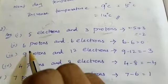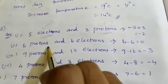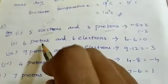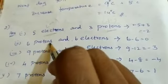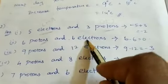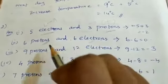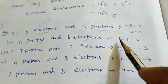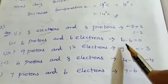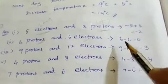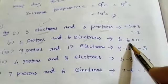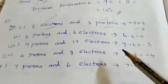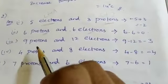Second sum: 6 protons means plus, 6 electrons means minus 6. So plus 6 minus 6 that's equal to 0. Third sum: 9 protons means plus, 12 electrons means minus 12. So plus 9 minus 12 equals minus 3.